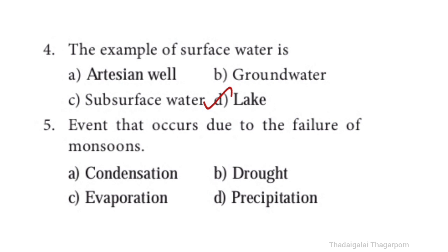Fifth question: What event occurs due to the failure of monsoons? The answer is option B: drought. The event that occurs due to the failure of monsoons is drought.